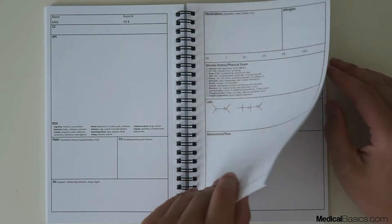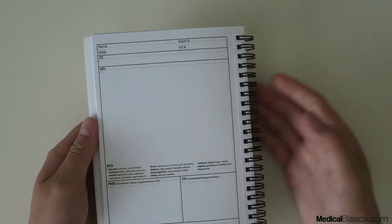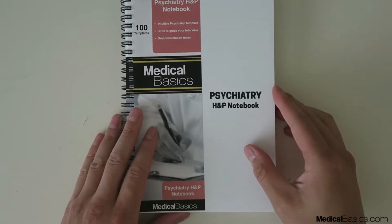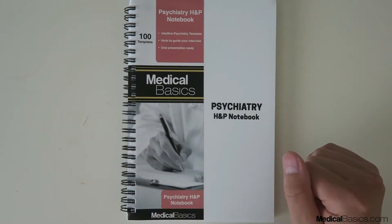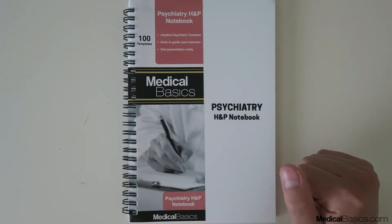Every template is going to look exactly the same, so it's going to be two pages so you can fold it in half and just take your history as you go down the line in a very organized way. This will fit in your white coat and it's a total of a hundred patients that you can see, so hopefully that'll be enough for one rotation.